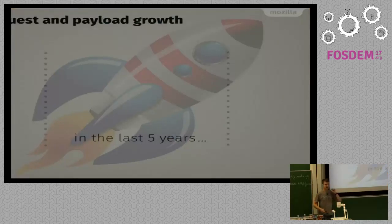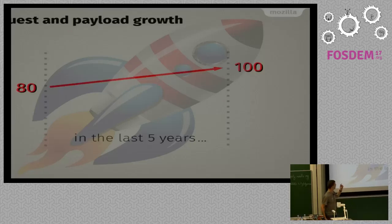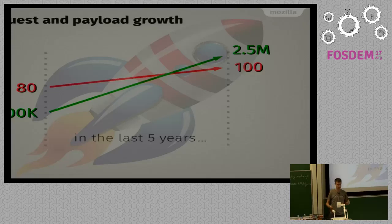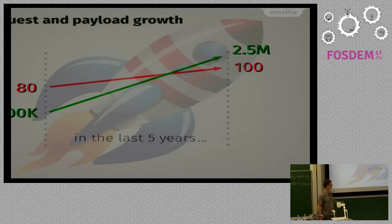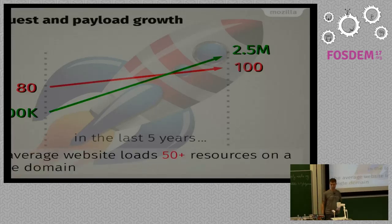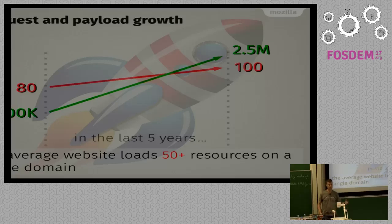As a short recap, the web has changed. The number of objects has increased, the size of the data from an average web page today has grown - amount of data, amount of objects or requests - and a lot of them are from the same domain. That's basically just facts about the web today: a lot of objects, a lot of data, and a lot of those objects are on the same site.